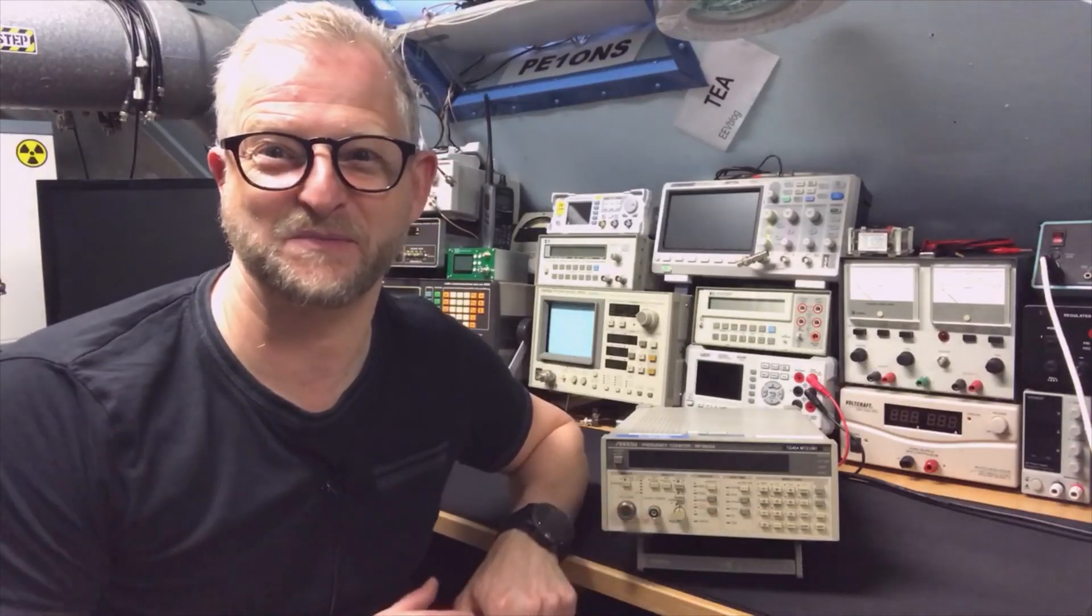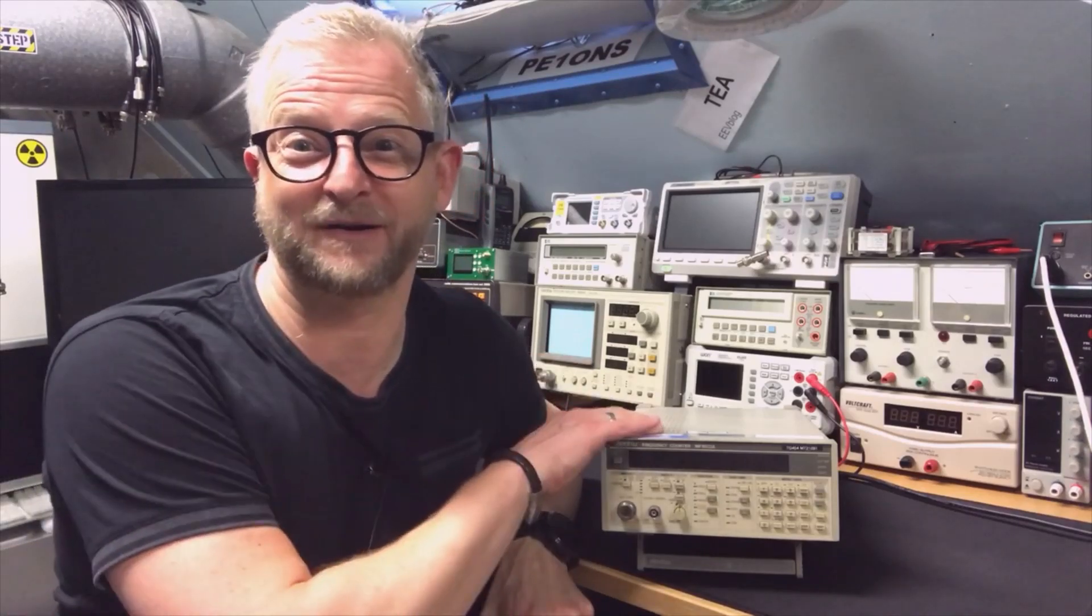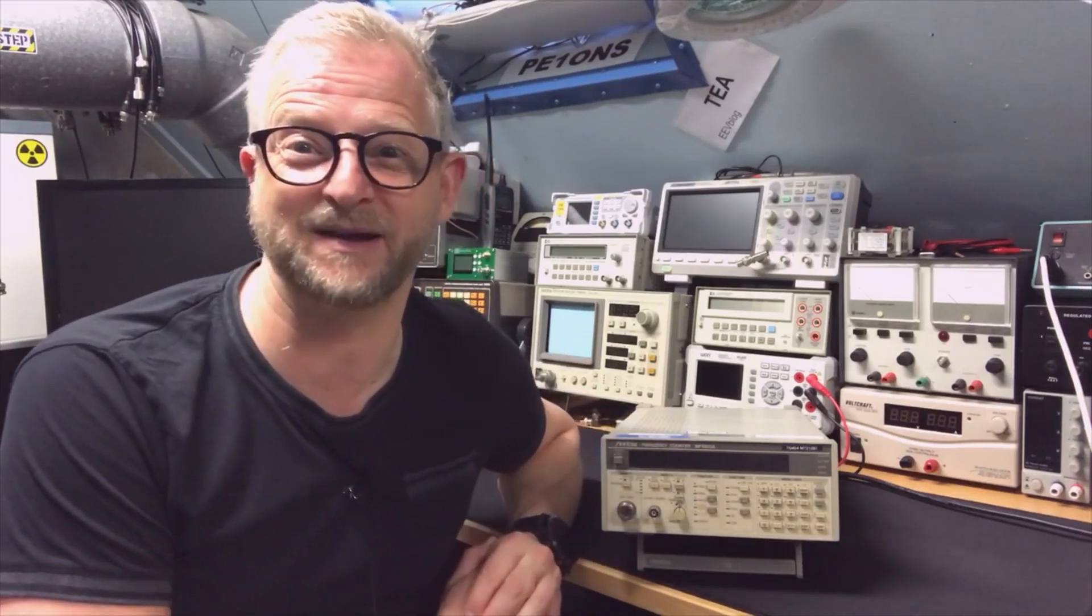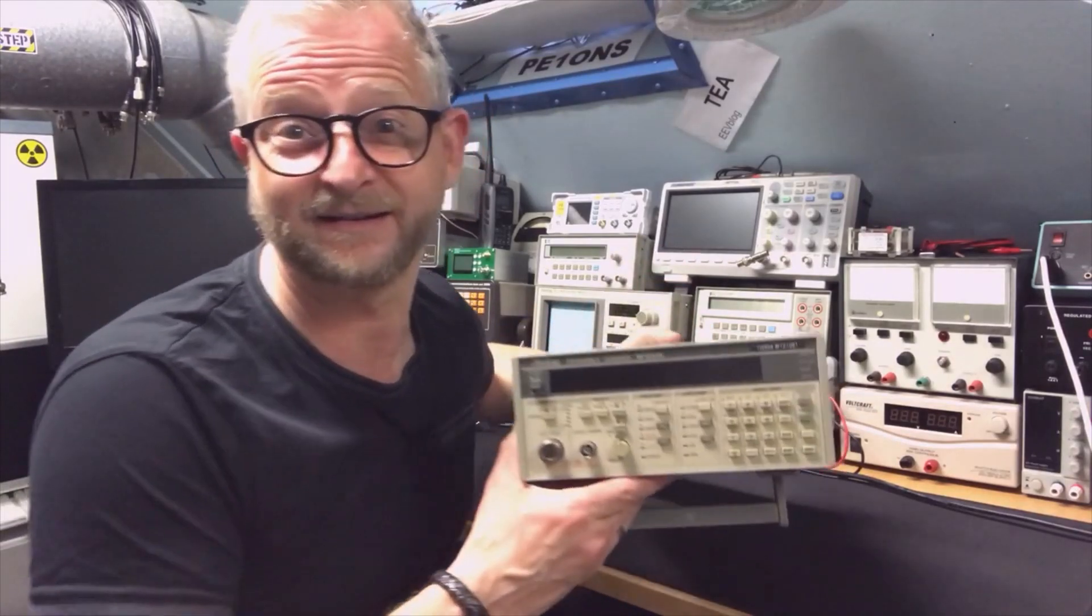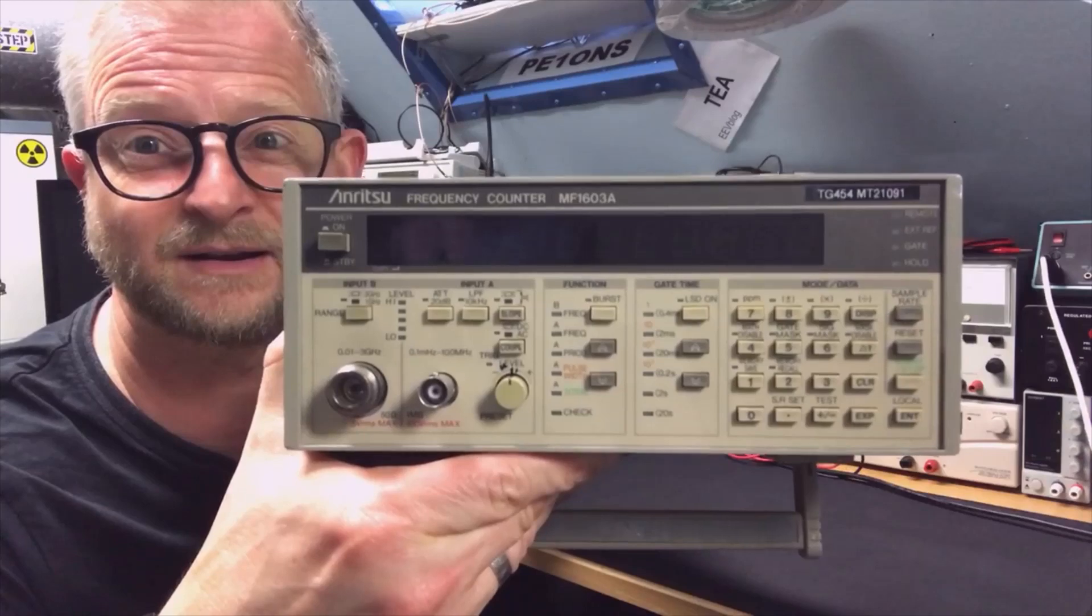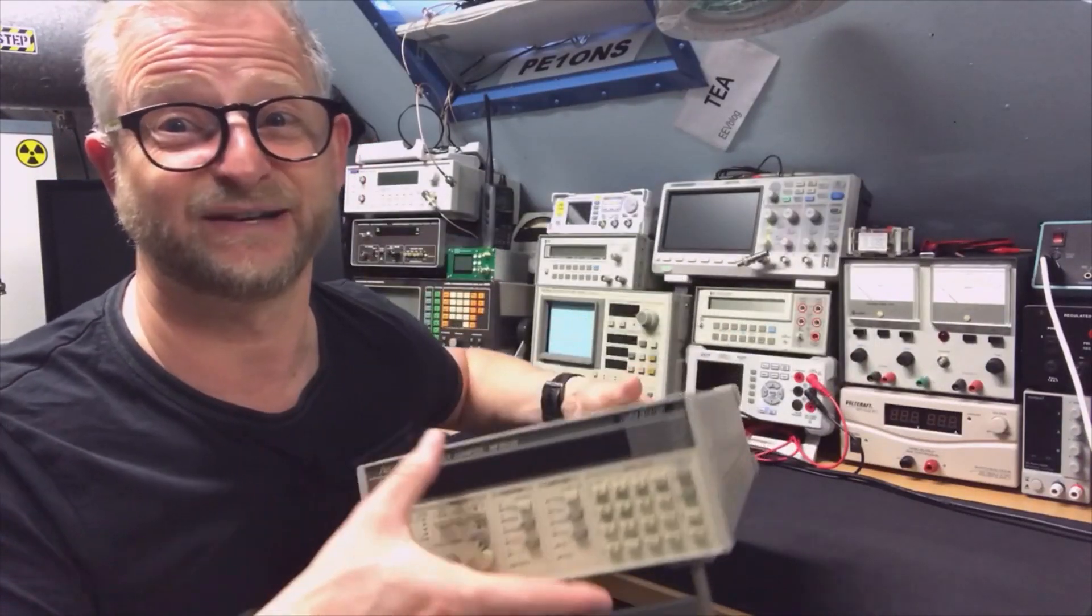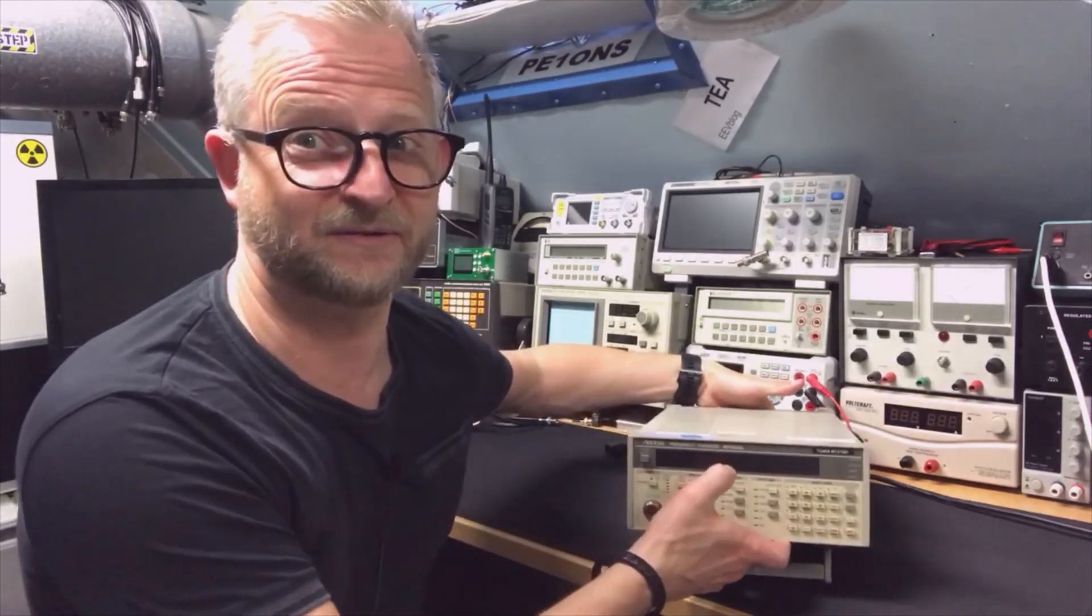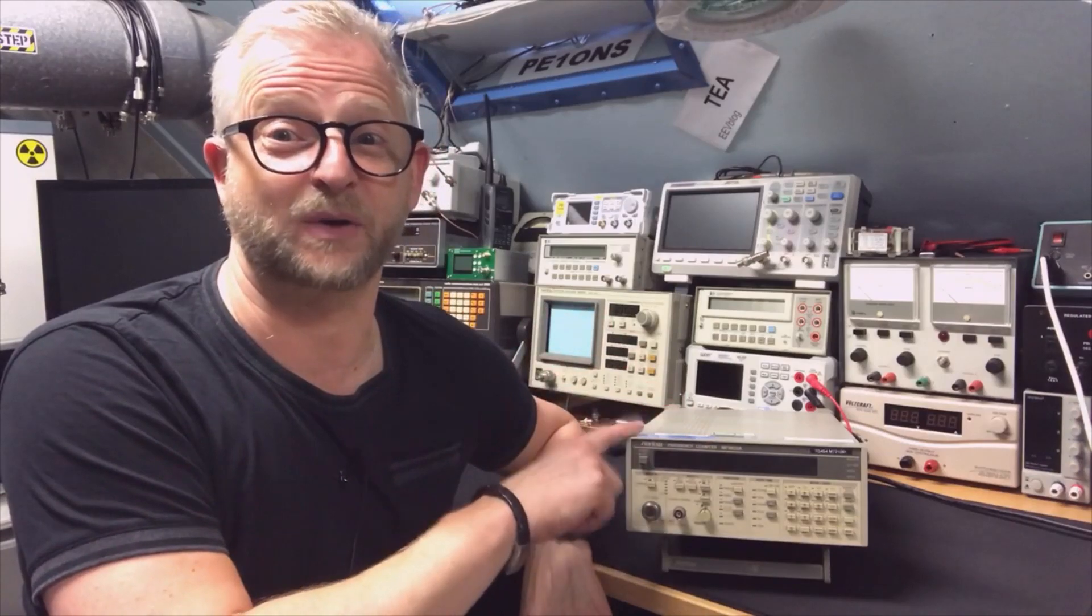Hello and welcome back. I'm a little bit excited because I won an auction on eBay. It comes from the UK. Look at this - it's the Anritsu frequency counter. I would guess it's about 20 years old, but it has 11 digits, and it also has a proper oscillator. Otherwise it makes no sense to have so many digits.